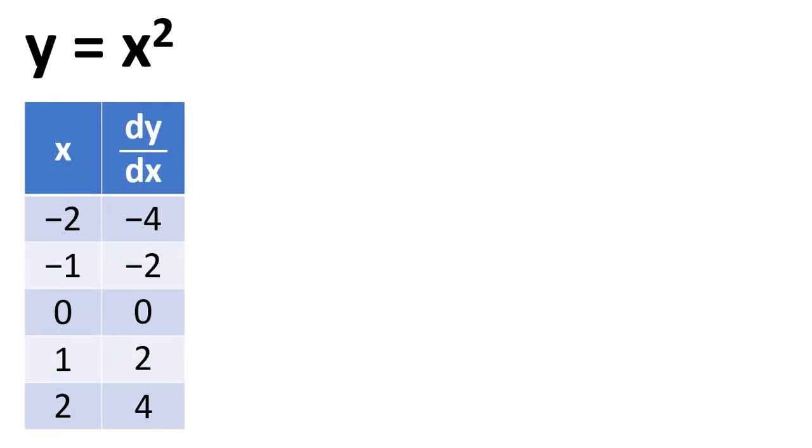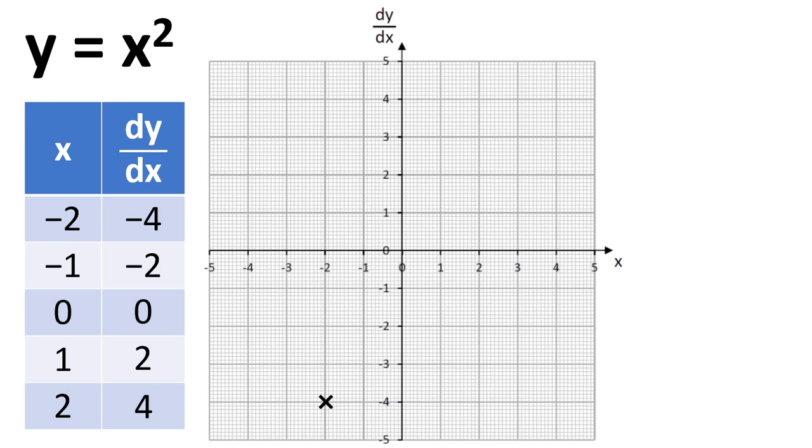So now we can actually look at these and plot them, these gradients versus x. So if we plot the points onto a graph where we're looking at dy by dx versus x, we get a straight line graph. And the equation for that is dy by dx equals two x.